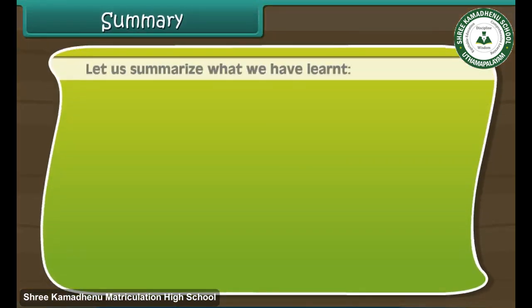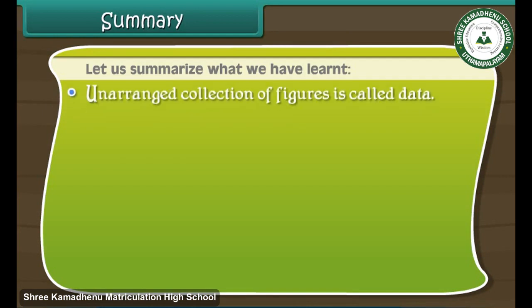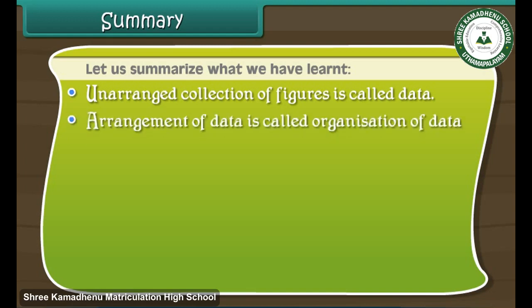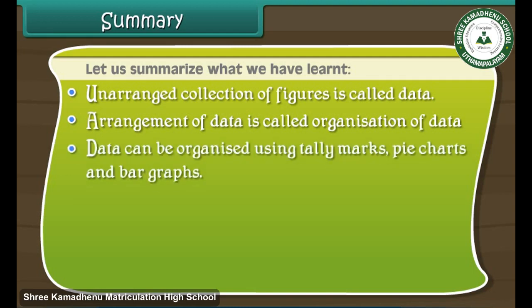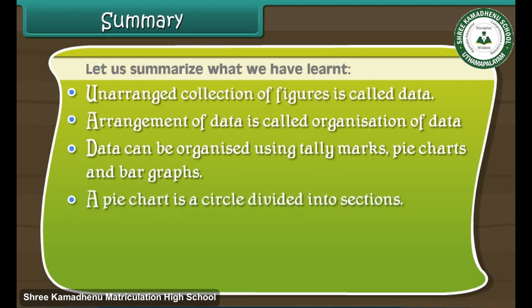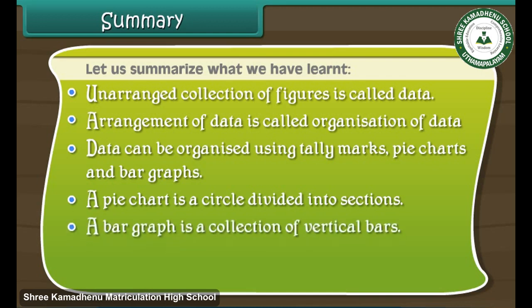Summary: Let us summarize what we have learned. Unarranged collection of figures is called data. Arrangement of data is called organisation of data. Data can be organised using tally marks, pie charts and bar graphs. A pie chart is a circle divided into sections. A bar graph is a collection of vertical bars.